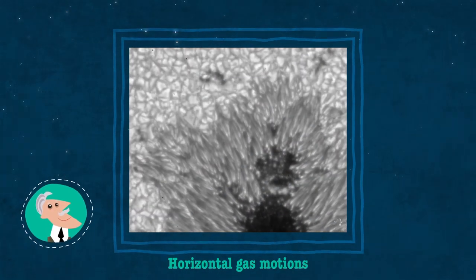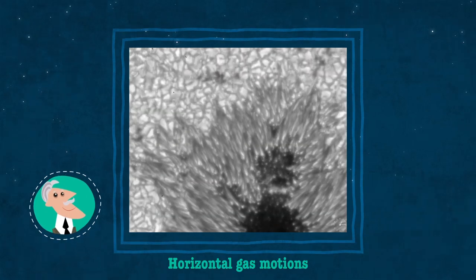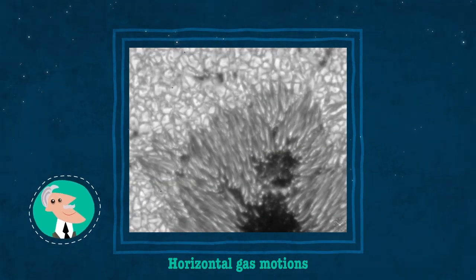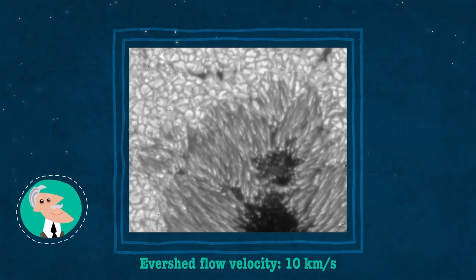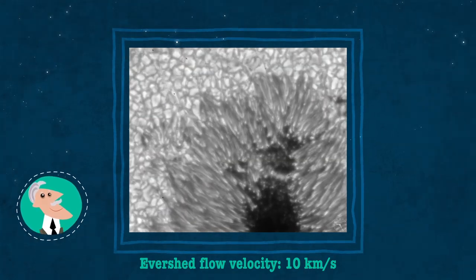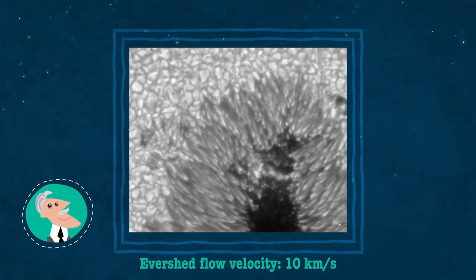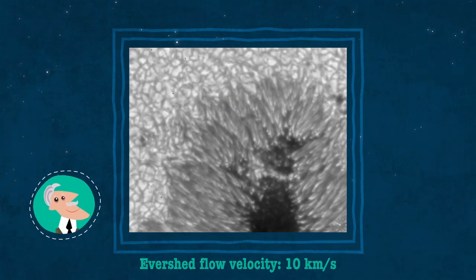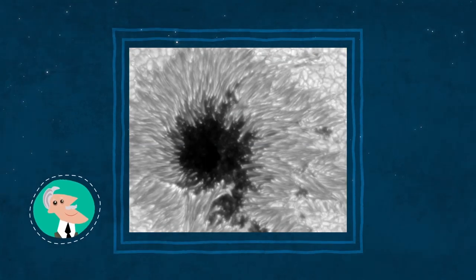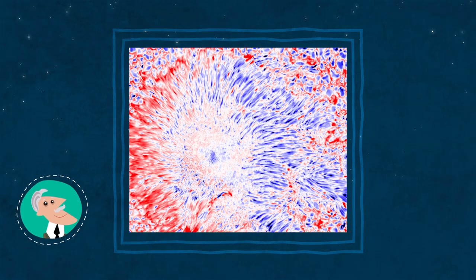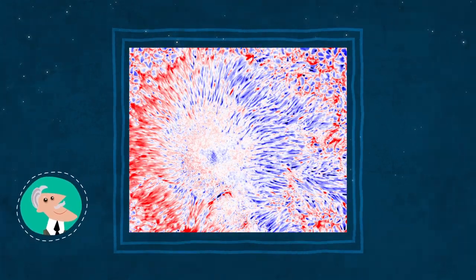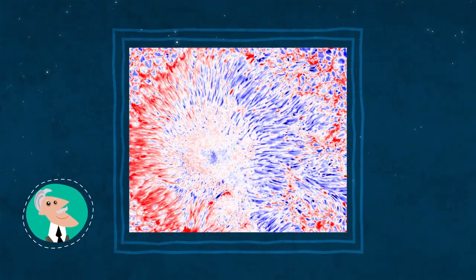Die horizontalen Bewegungen folgen den Filamenten, welche die Penumbra ausmachen. Mit 10 Kilometern und mehr pro Sekunde erreichen sie manchmal Überschallgeschwindigkeit. Aber es gibt noch immer offene Fragen: Warum treten diese Ströme auf? Wie hängen sie mit dem Magnetfeld in der Penumbra zusammen? Wohin strömt das Gas?